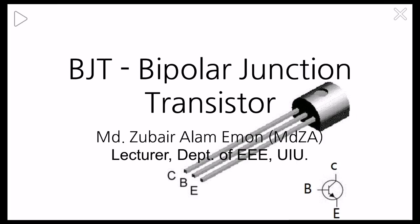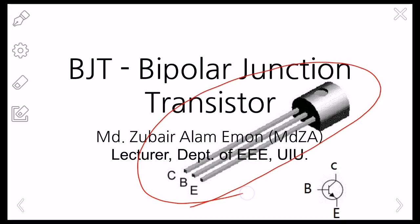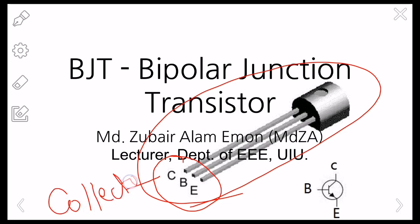Today we'll be talking about BJT, the bipolar junction transistor, very often used in discrete circuits in electronics. A BJT is a three terminal device. C stands for collector, B for base, and E for emitter.